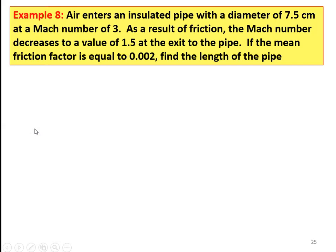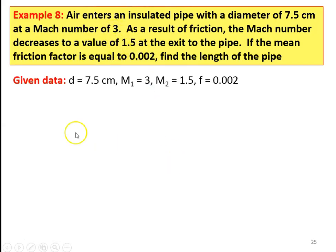Example number 8. Air enters an insulated pipe with a diameter of 7.5 centimeter and a Mach number of 3. As a result of friction, the Mach number decreases to a value of 1.5 at the exit to the pipe. The entry is supersonic flow and throughout the pipe it is supersonic flow. If the mean friction factor equal to 0.002, find the length of the pipe. Given: diameter equal to 7.5 centimeter, M1 equal to 3, M2 equal to 1.5, friction factor equal to 0.002.